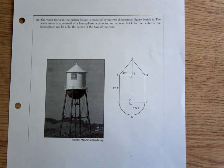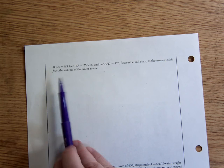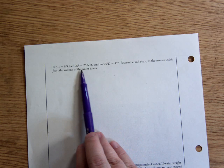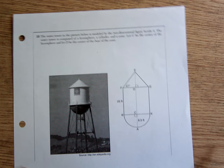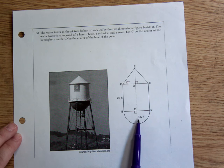Now all the questions associated with this are on the back of this page, but the first part pretty much just fills in all the things that we've already filled in on the picture anyway. AC is 8.5 feet, BF is 25 feet, and angle EFD measures 47 degrees. They want me to determine and state to the nearest cubic foot the volume of the water tower.